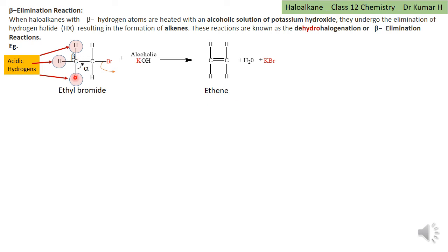Since there is elimination of hydrogen from beta carbon and halogen from alpha carbon, this reaction is called dehydrohalogenation, meaning removal of hydrogen and halogen — hydrogen from beta and halogen from alpha carbon. Hence it is called dehydrohalogenation or beta elimination reaction. Beta elimination is elimination of hydrogen from beta carbon and halogen from alpha carbon, leading to dehydrohalogenation.